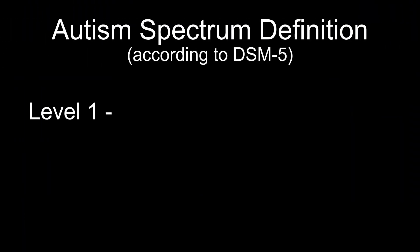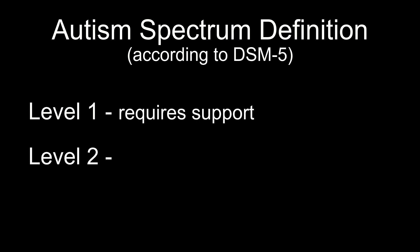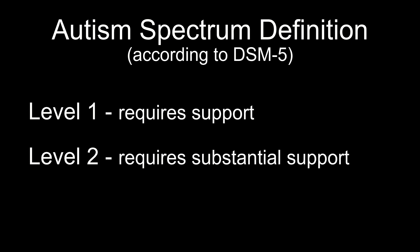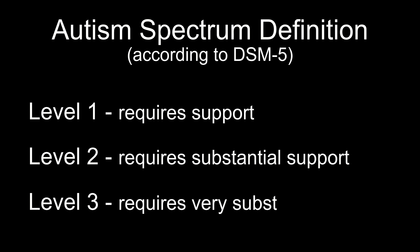Autism spectrum refers to the amount of help required. It also comes from the DSM. This is much more defined than people think. The three levels on that spectrum are: level one requires support, level two requires substantial support, and level three requires very substantial support.